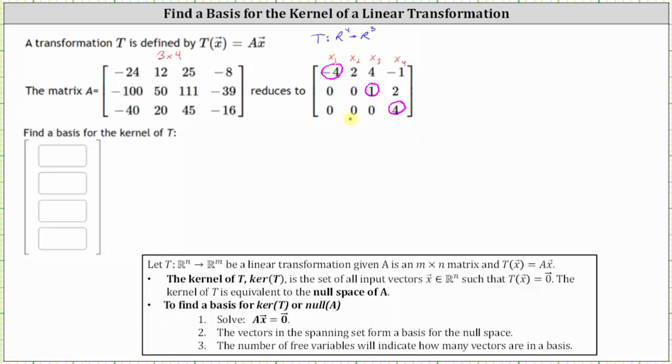Notice x two is a free variable. Because we have one free variable, a basis for the kernel of T will have one vector, which we can see from the answer cell.